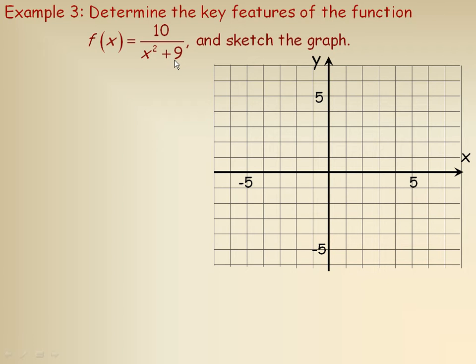This example illustrates how there aren't always restrictions on the domain. Remember you find restrictions on the domain by finding any value that would make that denominator expression, the x squared plus 9 in this case, zero. And there are no numbers that make it equal zero. There are no vertical asymptotes, so the domain is the entire set of real numbers.